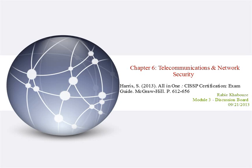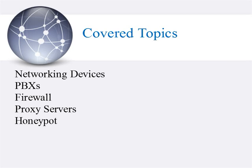Good evening. Today's presentation focuses on summarizing Chapter 6, Telecommunications and Networking Security, from pages 612 to 656 from Sean Harris' CISSP book. Topics I will be covering in this summary are networking devices, PBX, firewall, proxy servers, and honeypot.